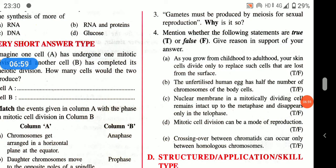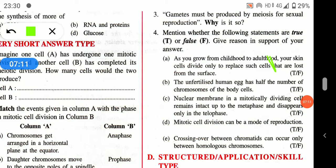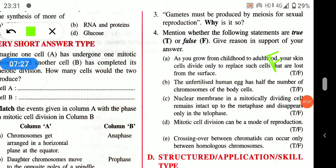True or False: as you grow from childhood to adulthood, your skin cells divide only to replace cells lost from the surface. This is false — cells also divide for growth. The unfertilized human egg has half the number of chromosomes of body cells — this is true, as egg cells are haploid while body cells are diploid.